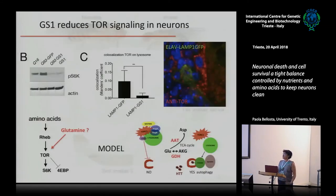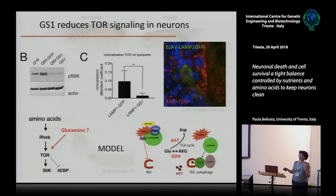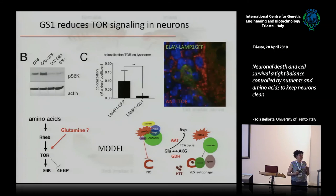We looked at our data and found that in Q93 flies, S6 kinase — which is a target of TOR activation — was increased, but in the presence of GS1, or GS1 alone, S6 kinase is totally inhibited, suggesting that TOR signaling is off.